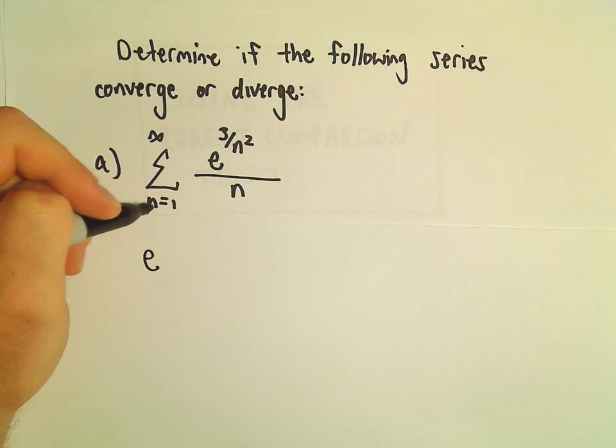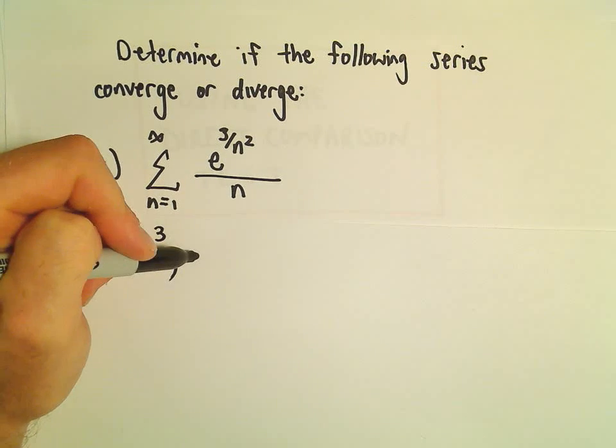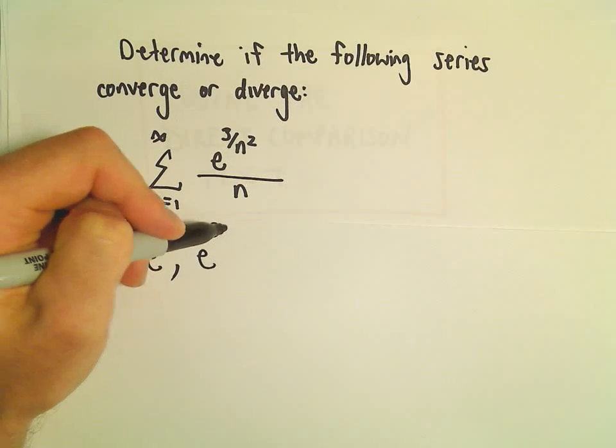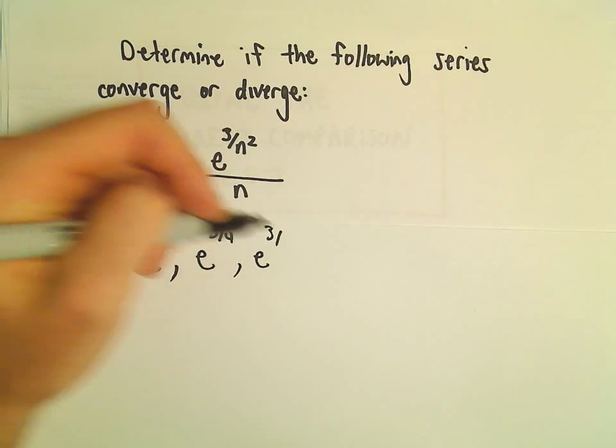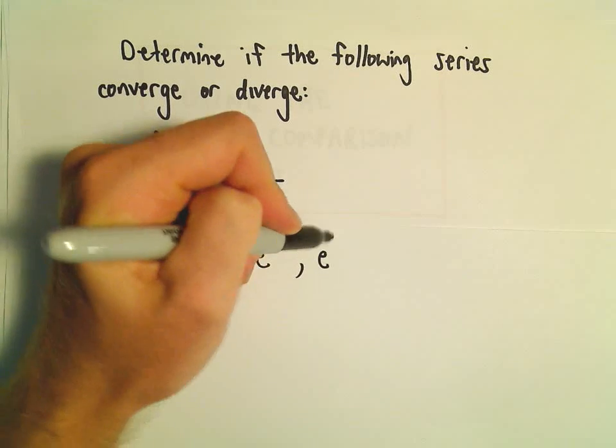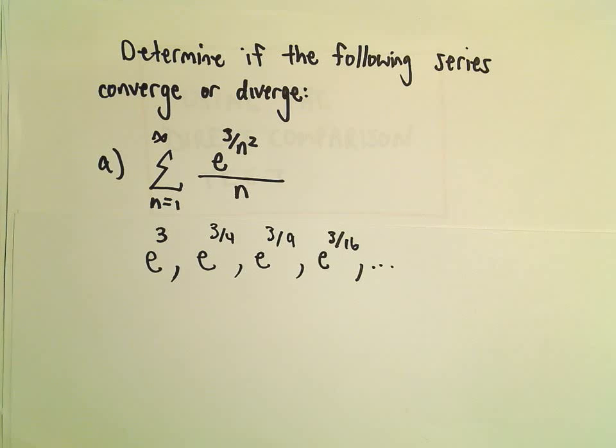Notice if we just plug in values. If we plug in n equals 1, we would get e to the 3rd in the numerator. Then if we plug in 2, we'll get e to the 3/4. Then if we plug in n equals 3, we'll get e to the 3/9, etc. So I'm just looking at values in the numerator.